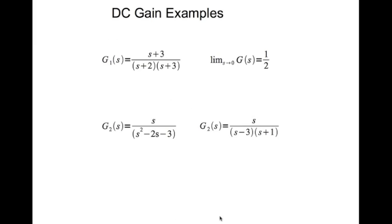Now let's look at an example. G1(s) is (s+3) divided by (s+2)(s+3). If you look at the poles, one pole is at minus two and one pole is at minus three, so both poles are in the left half plane. They have negative real parts, so you can apply the final value theorem to find the DC gain, which happens to be one divided by two.